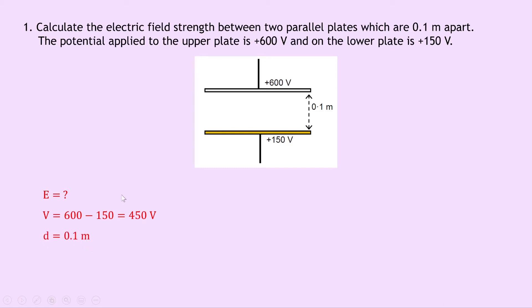So writing down our equation relating E, V and D, we get V equals ED, and rearranging for E we get E equals V divided by D. Substituting in the numbers, we get 450 divided by 0.1, which gives us a final answer of 4,500 volts per metre. You could also get away with stating your units as newtons per coulomb.